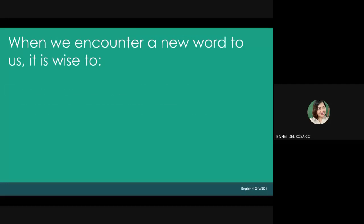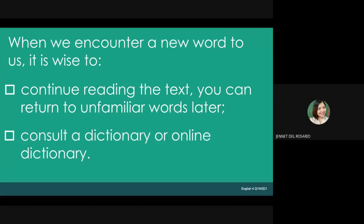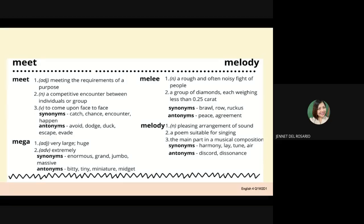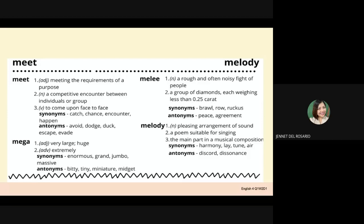When we encounter a new word, it is wise to continue reading the text — you can return to unfamiliar words later. You can go back and consult a dictionary or an online dictionary if you don't have one at home. Let us look at this page. What is on top of the page? The two words are 'myth' and 'melody.' What do we call these words? They start with letter G — we call them guide words.